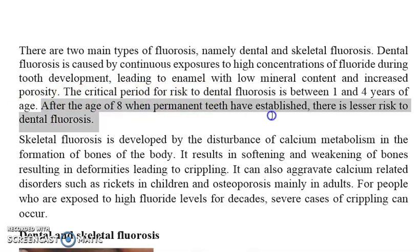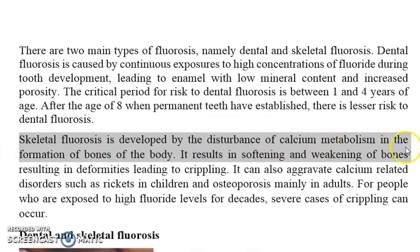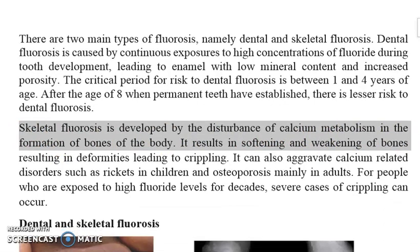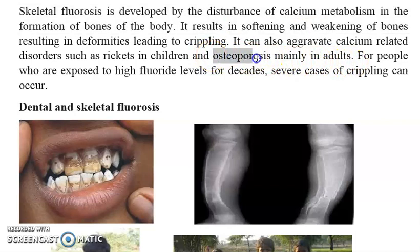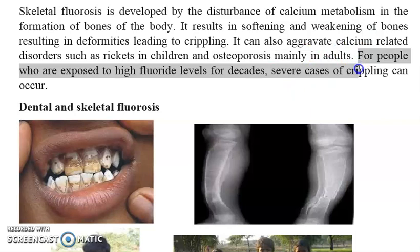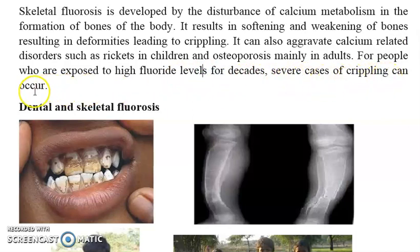After the age of 8, when the permanent teeth have established, there is less risk. Skeletal fluorosis is developed by disturbance of calcium metabolism in the formation of bones of the body. It results in softening and weakening of the bones, resulting in deformities and then leading to crippling. It can also aggravate calcium-related disorders such as rickets in children and osteoporosis mainly in adults — osteoporosis being a reduction in bone density causing brittle bones prone to fracture. For people exposed to high fluoride levels for many decades, severe cases of crippling can occur.